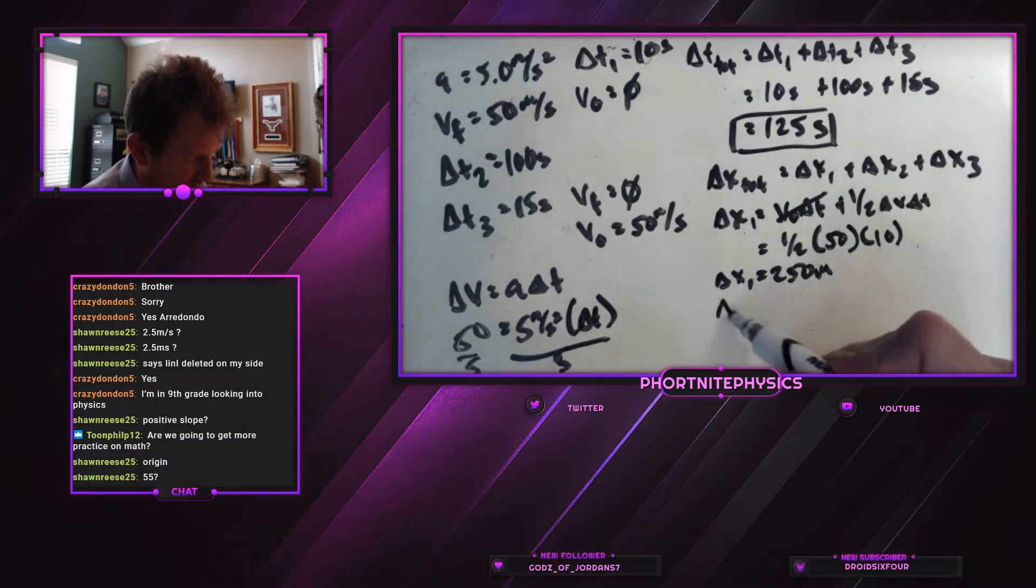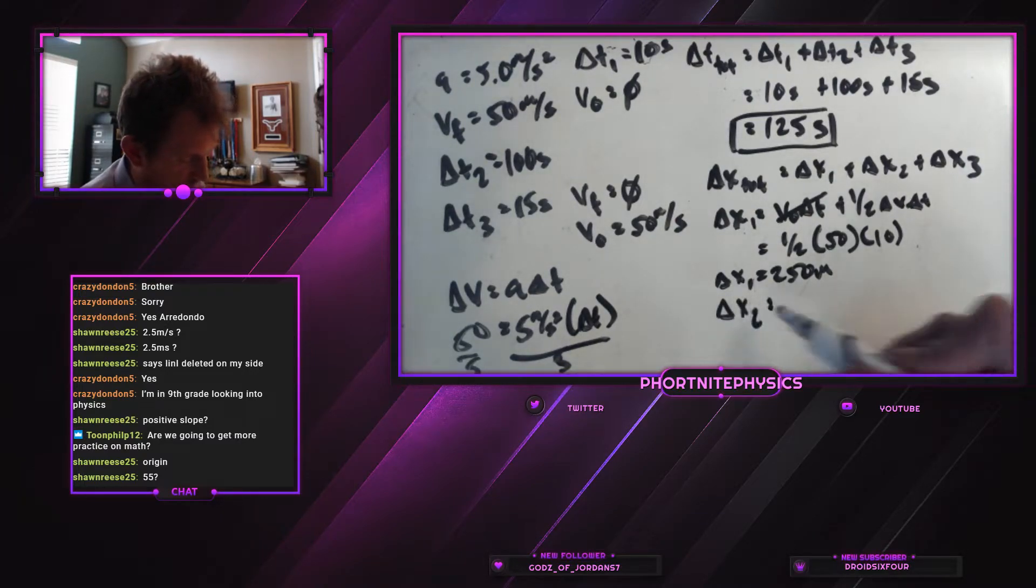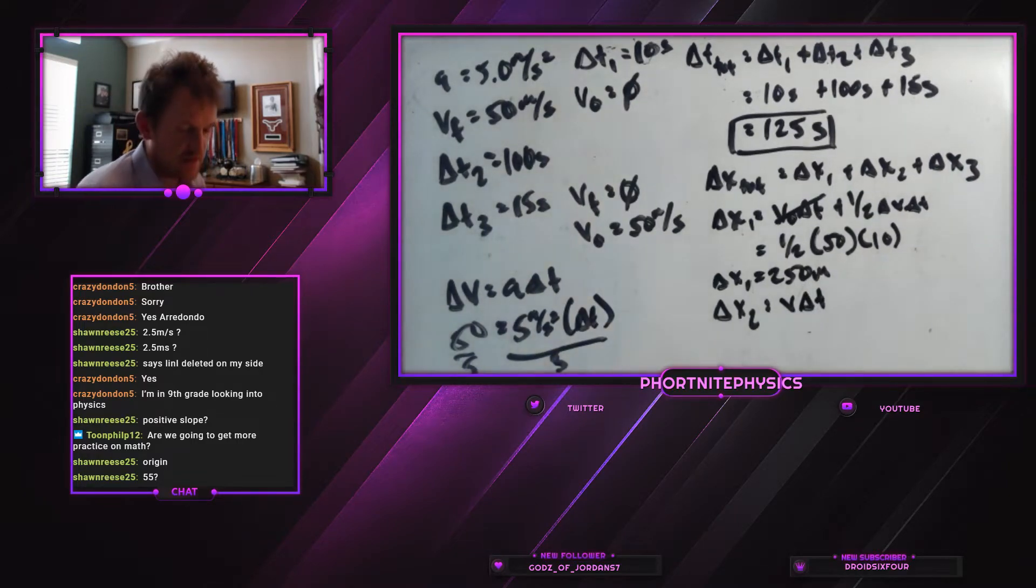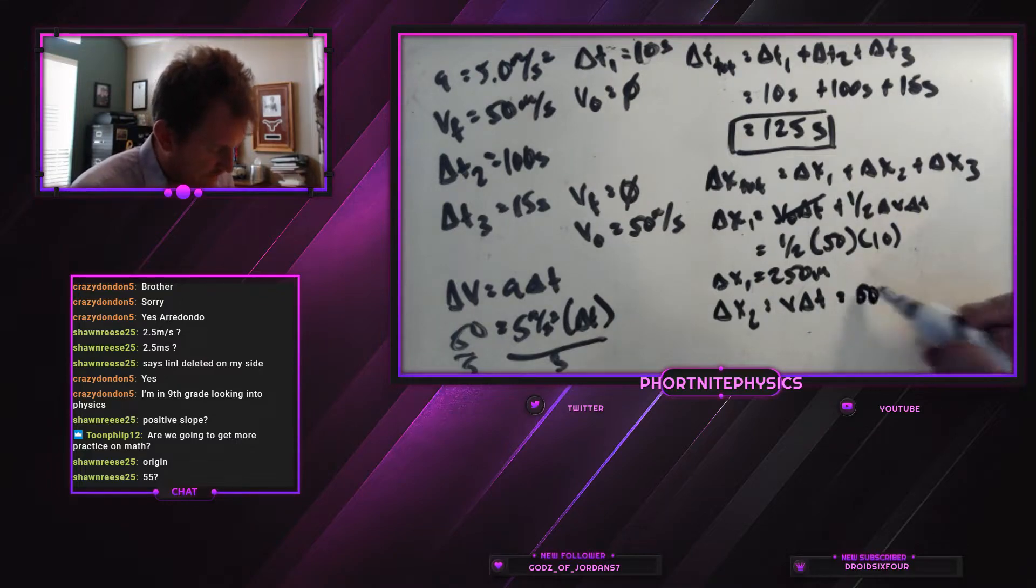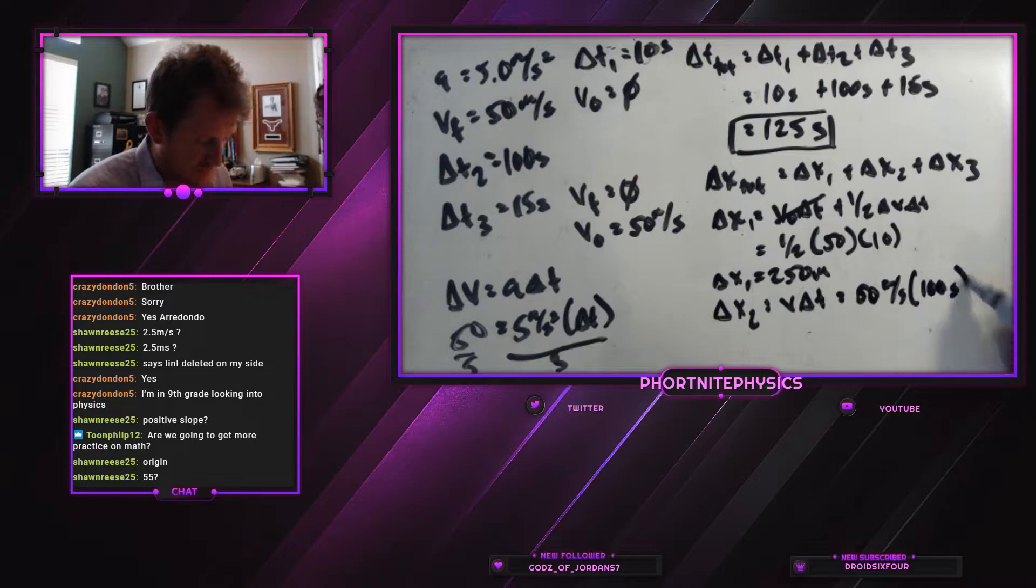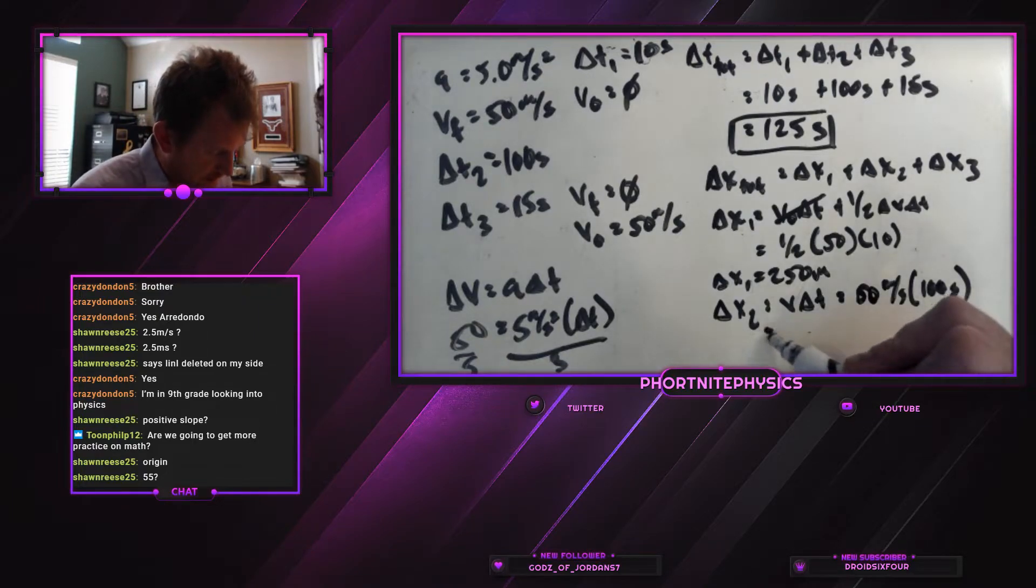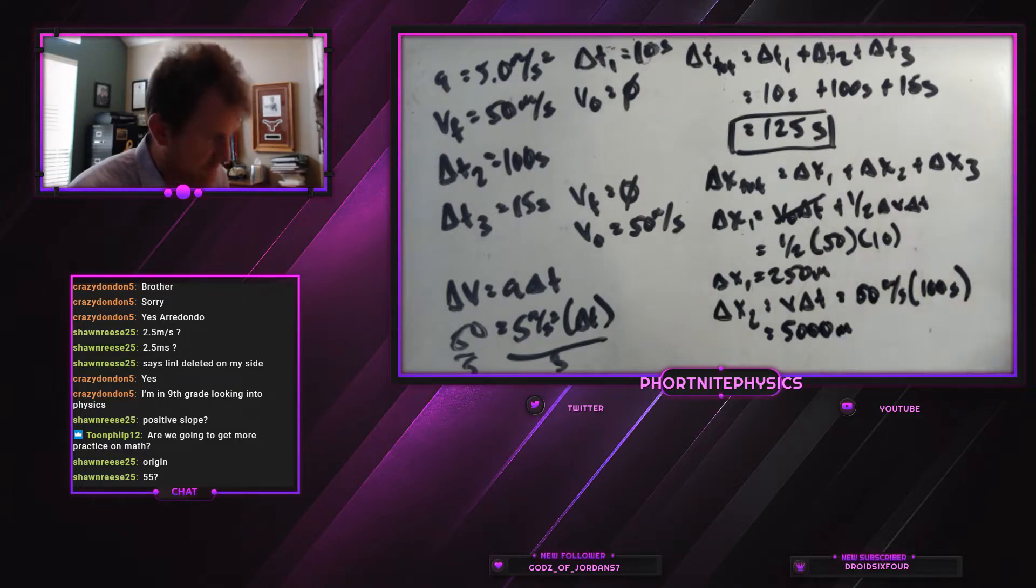Delta x2 is v multiplied by delta t. Because we already know how fast we're moving at the beginning of section 2. So we can just plug that in. 50 meters per second multiplied by 100 seconds. And that gives us a delta x2 of 5,000 meters.